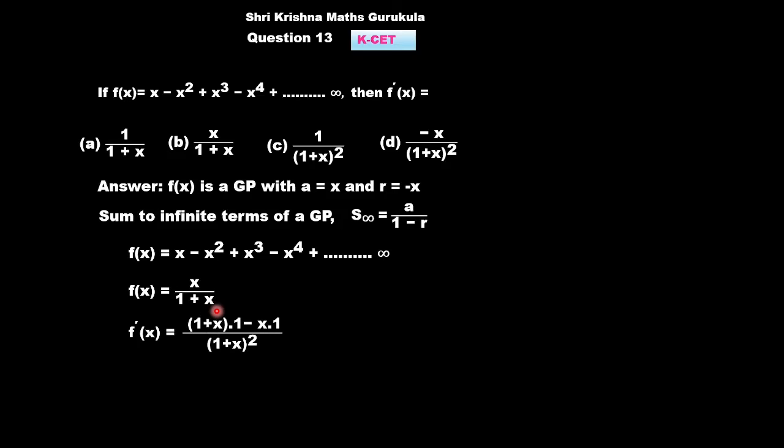Now, we are going to differentiate. We will differentiate this using the quotient rule. f'(x) equals denominator times derivative of the numerator, minus numerator times derivative of the denominator, all divided by denominator squared. The derivative of the numerator is 1, and the derivative of the denominator is 1. So we get (1+x)(1) - x(1) over (1+x)². The terms cancel, and our derivative becomes 1/(1+x)². So, the correct answer is option C.